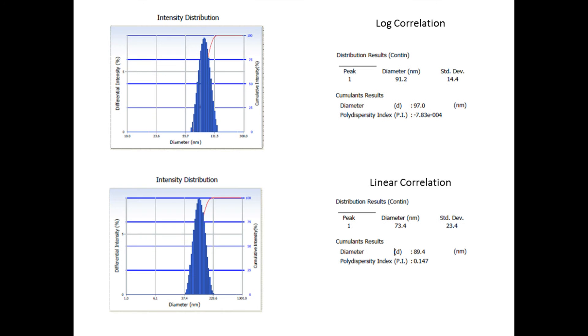The top intensity distribution is log autocorrelated, while the bottom distribution is linearly correlated, and you can see that in this case, the log autocorrelator diameter and standard deviation results is closer to the standard size of 100 nanometers than the linear autocorrelator results. This data is centered with no skew.